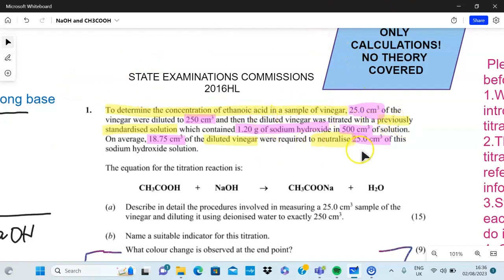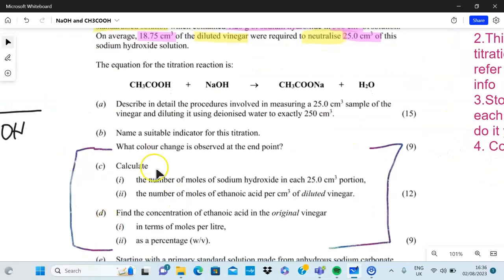Getting back to the question, I have highlighted certain things. The yellow ones are basically telling you what this whole experiment is about and the purple ones are the numerical data. What I think is important is the whole idea: to determine the concentration of ethanoic acid in a sample of vinegar using previously standardized solution of NaOH. You would know from my previous videos what does previously standardized mean. Then diluted vinegar - that's important, it's not just normal vinegar, it's diluted. The whole idea is to neutralize the solution.